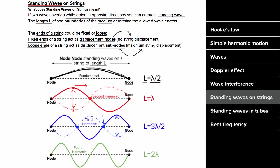For the second harmonic, we still start and end at a node, and the next possibility is one entire wavelength — the length of the medium equals one wavelength. The third harmonic is three halves of a wavelength. There's no limit; you can keep going. To excite higher standing waves, you must keep increasing the frequency, which decreases the wavelength.